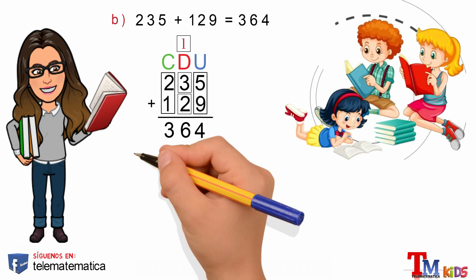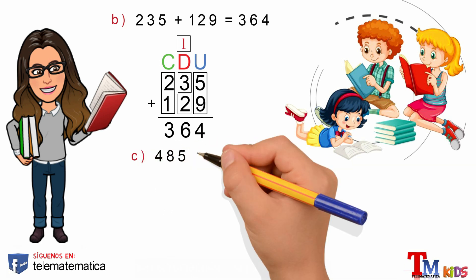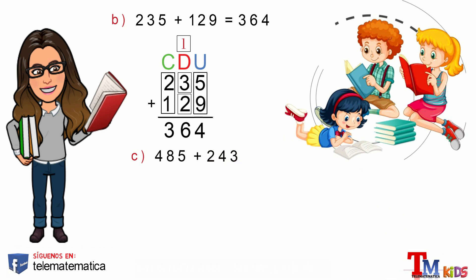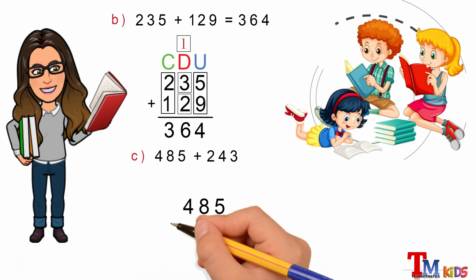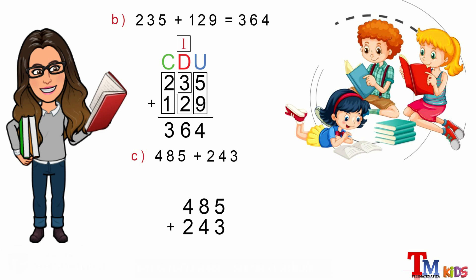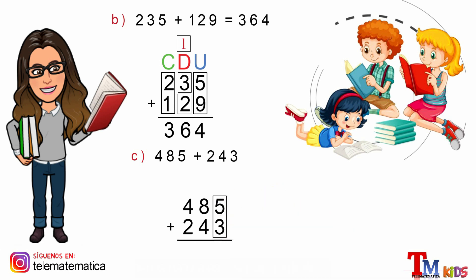Veamos un último literal: 485 más 243. En primer lugar, escribiremos los números verticalmente, teniendo en cuenta ubicar la unidad debajo de la unidad, la decena debajo de la decena y la centena debajo de la centena. En segundo lugar, comenzaremos la suma por la columna de las unidades: 5 más 3 son 8.